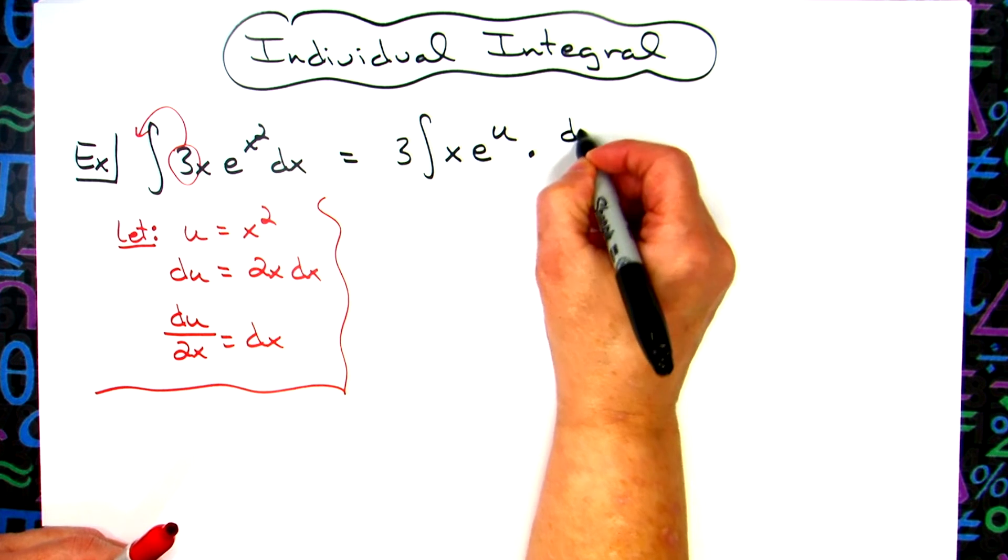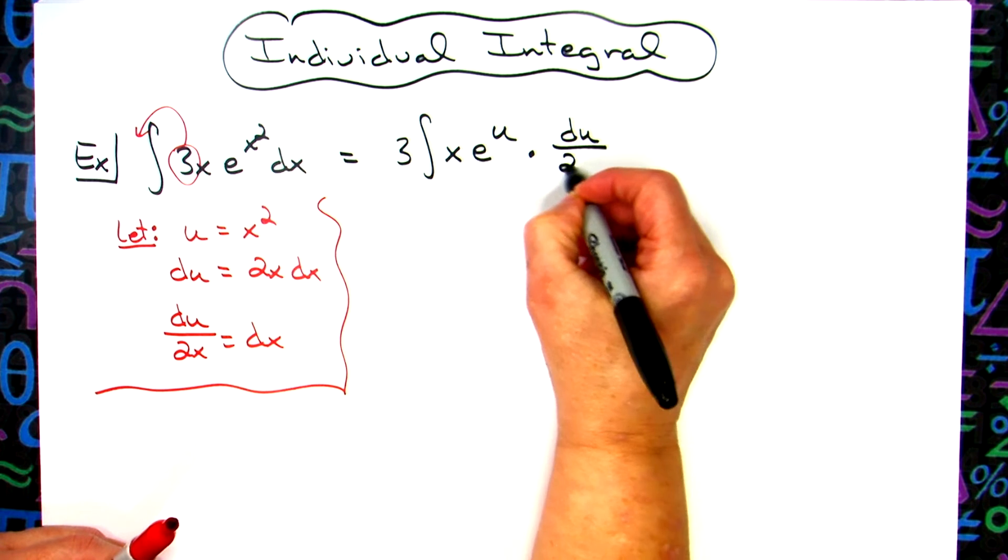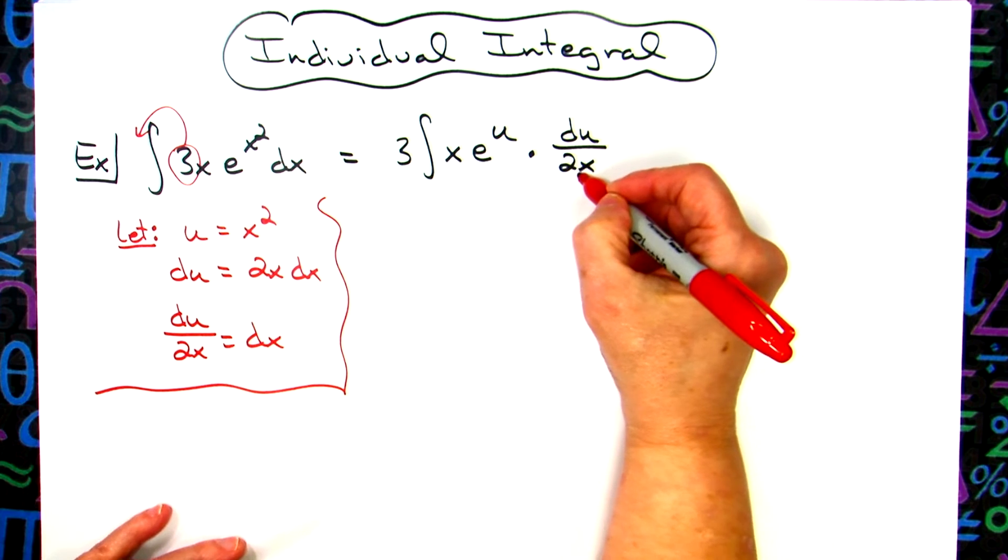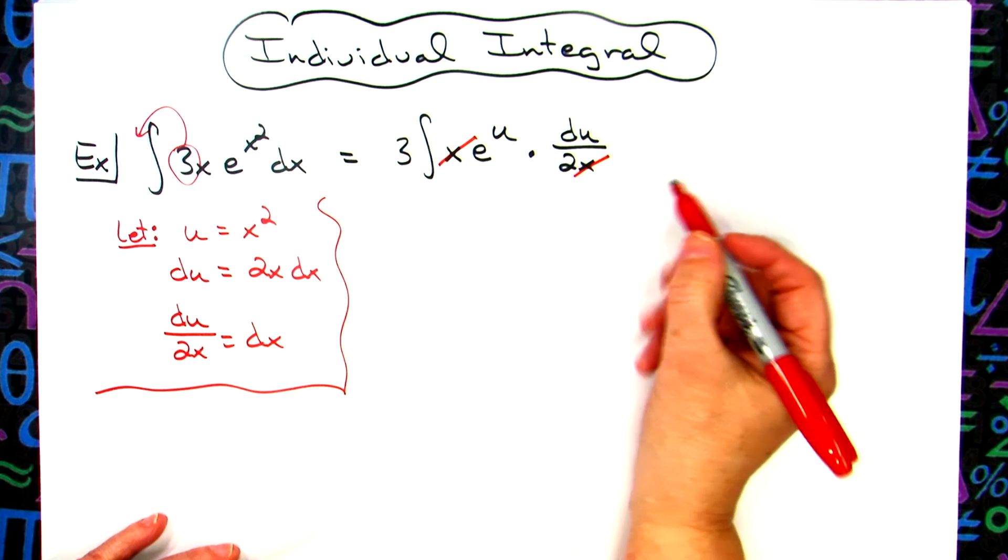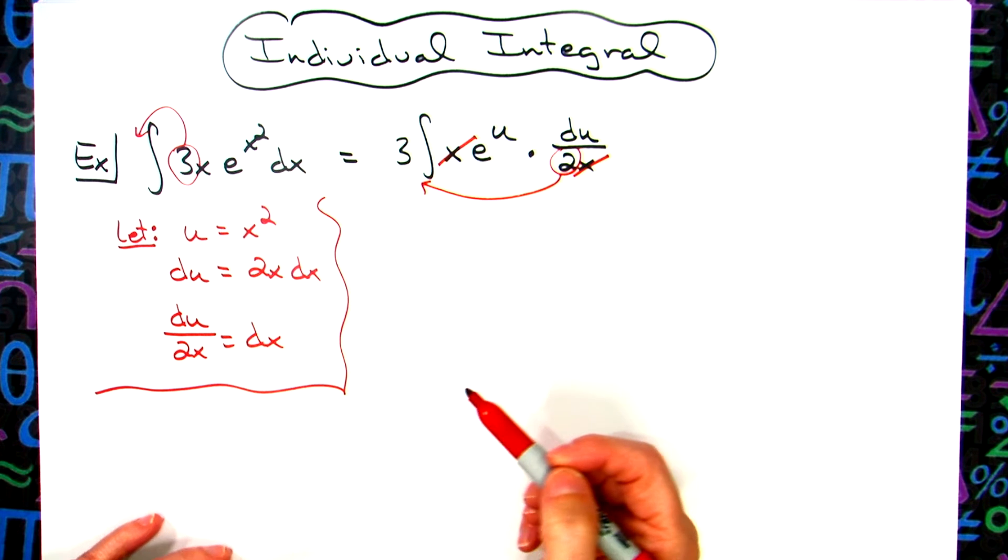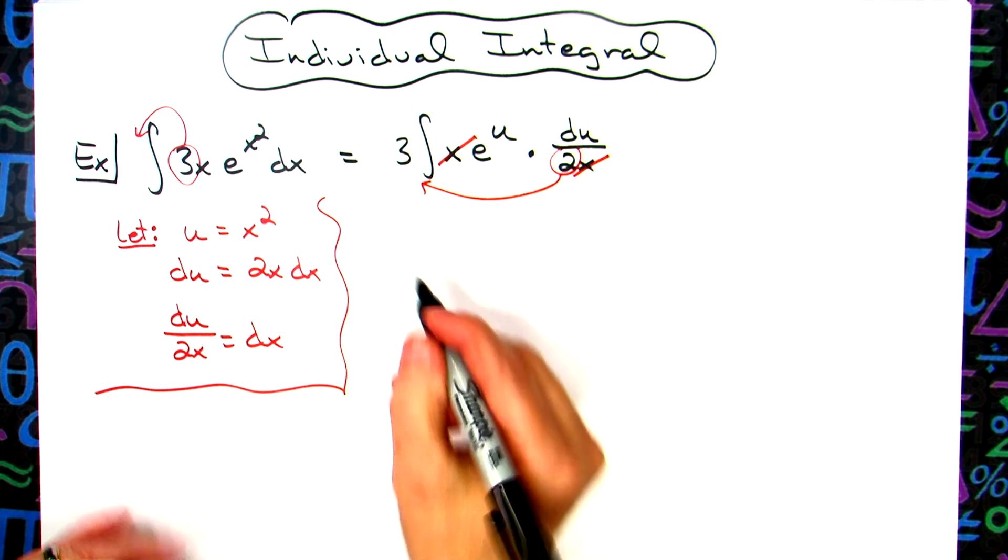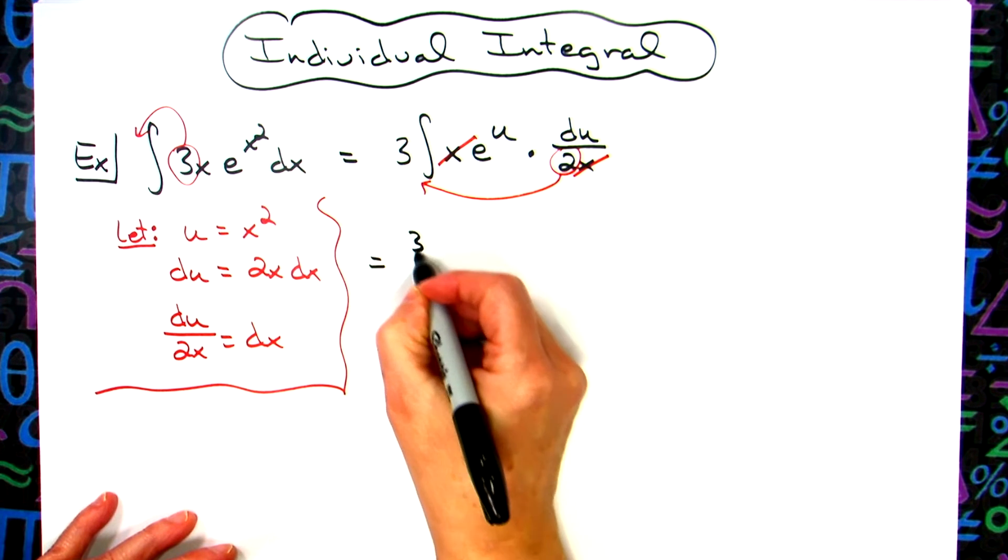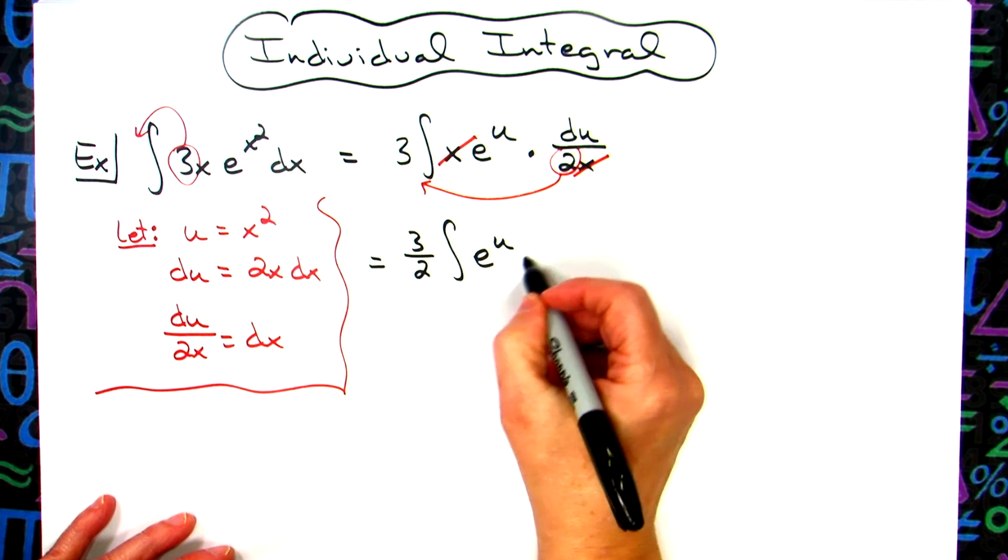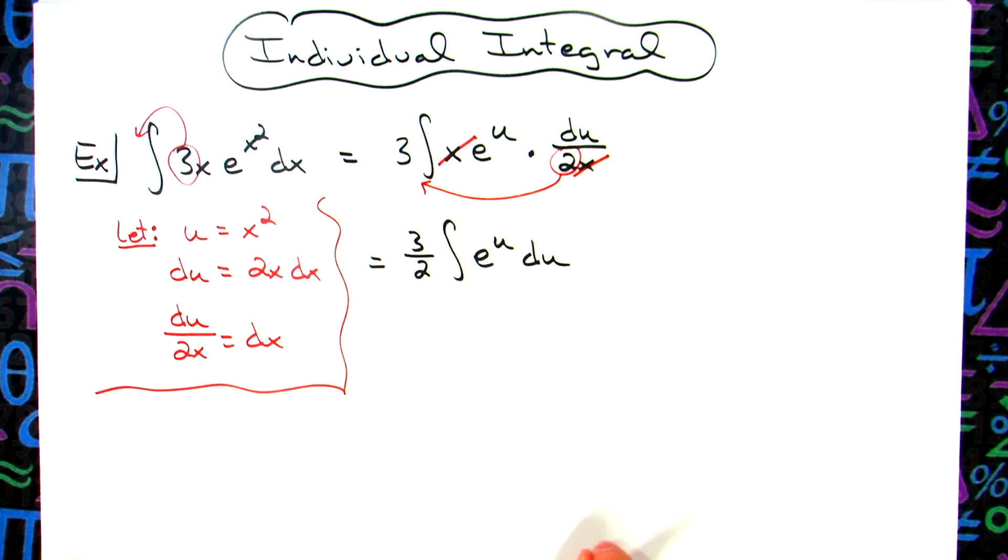Now that's going to allow me to cross out the x's and bring out the 2. Now I already have a 3 out there, so when I rewrite on the next line I'll have 3 over 2 out in front. We'll have the integral of e to the u du.